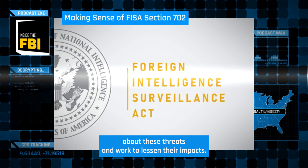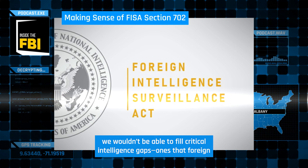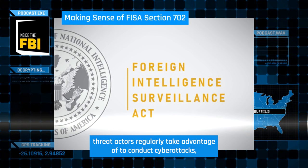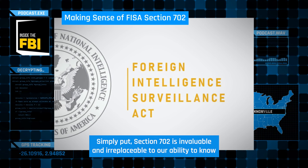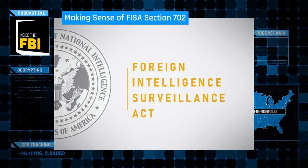Without Section 702, we wouldn't be able to fill critical intelligence gaps — ones that foreign threat actors regularly take advantage of to conduct cyber attacks, spying campaigns, terrorism, and other foreign threats. Simply put, Section 702 is invaluable and irreplaceable to our ability to know what our foreign adversaries are doing and how they're doing it. Without this vital intelligence, we wouldn't be able to protect the American people or our country.